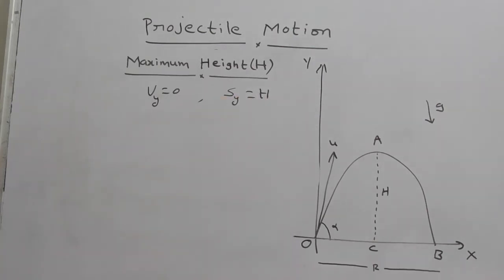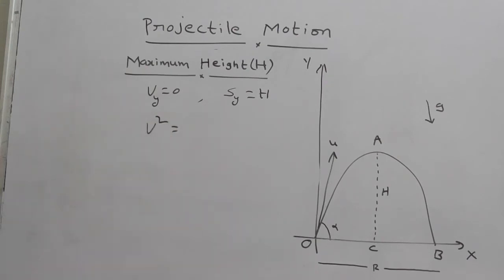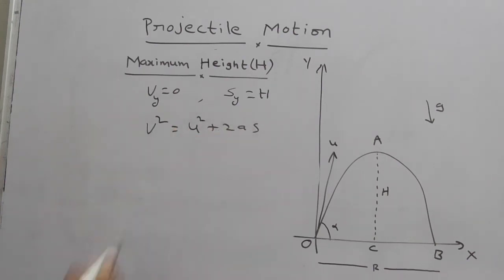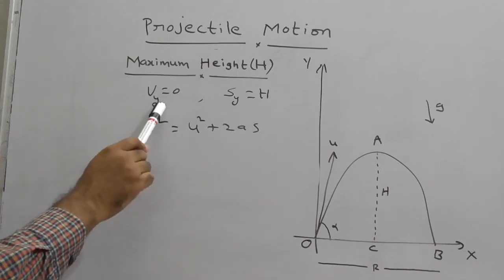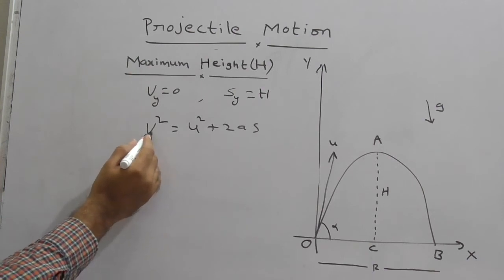We have one basic formula: v² = u² + 2as. Here all our formulas are based on y-axis, therefore you can write this formula as Vy² = Uy² + 2ay·sy.